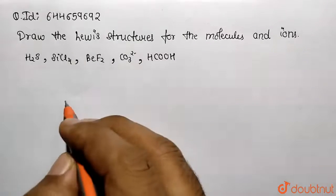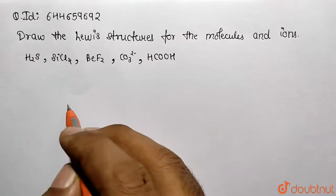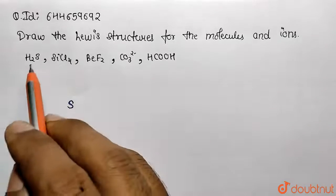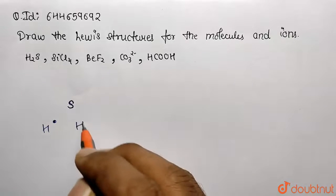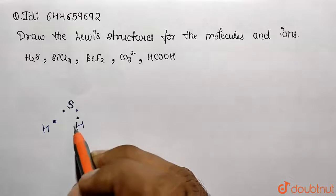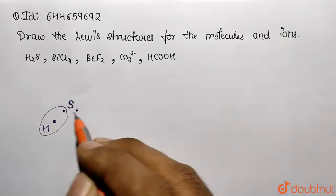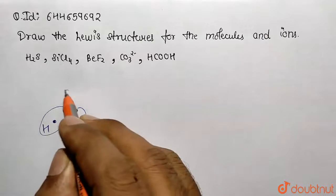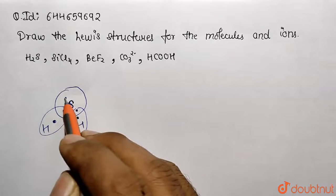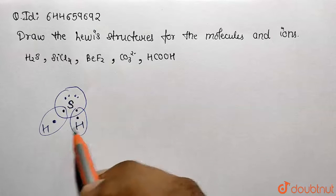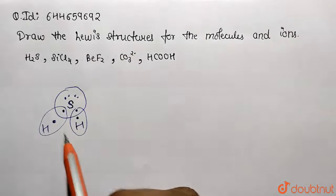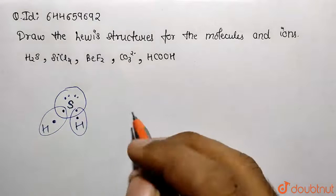First is H2S. Sulfur belongs to the oxygen family, so it has a total of six valence electrons. It makes two bonds with hydrogen. Each hydrogen has one valence electron and contributes one electron to form bonds. Sulfur has six total electrons, two are used in bonds, so two remain as lone pairs. This is the Lewis structure representation for H2S.